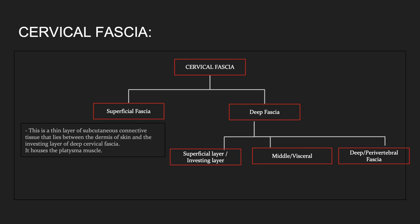Before going into the details of each neck space, let us have a brief idea about the cervical fascia. Basically the cervical fascia consists of superficial and deep fascia. The superficial fascia is just a thin layer of subcutaneous connective tissue that lies between the dermis of the skin and the investing layer of deep cervical fascia. The deep fascia encompasses the deep neck spaces and is divided into the superficial or investing layer of deep cervical fascia, the middle or visceral layer, and the deep or perivertebral fascia.